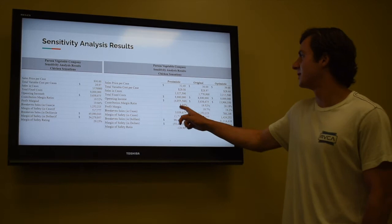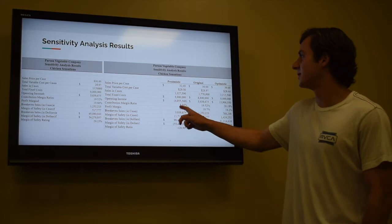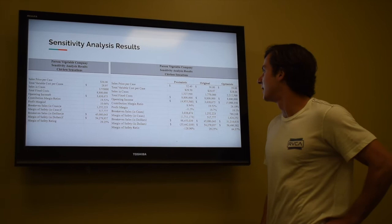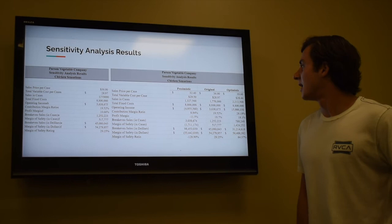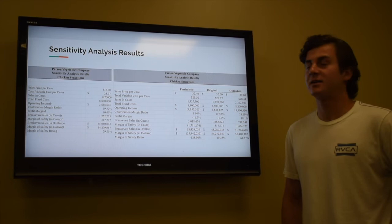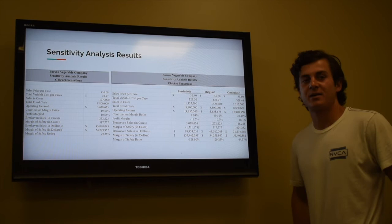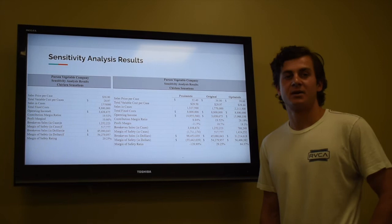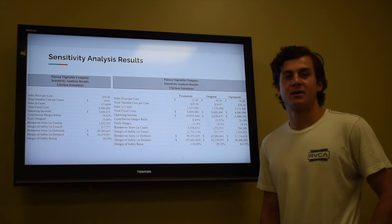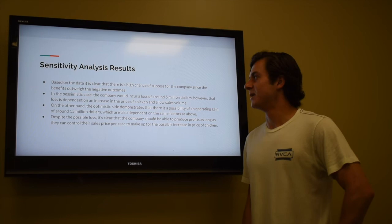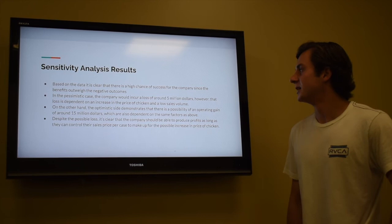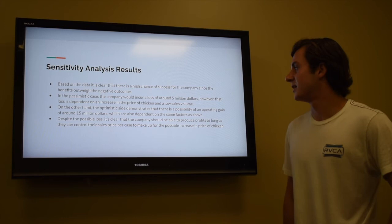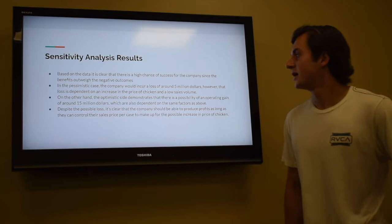Looking at our sensitivity analysis results, we have three different scenarios. In the pessimistic case, the sales price per case is lower, and the company would incur a loss of around $5 million, due to lower sales price per case and total variable cost factors. In the optimistic case, we would have an operating income of around $15 million — a pretty big increase — based on a higher sales price per case and lower price per chicken, which would increase our profit margin significantly. Based on the data, there's a high likelihood of success since the benefits outweigh the negative outcomes.